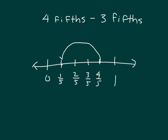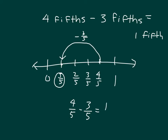And as you see right there, I write that out — I subtracted three-fifths. So four-fifths minus three-fifths does give us one-fifth. If I was to write that out using numbers, it would be four-fifths minus three-fifths does equal one-fifth. This is the subtraction sentence: four-fifths minus three-fifths equals one-fifth.